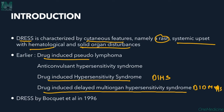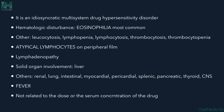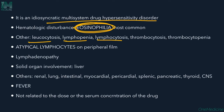First described by Bockett in 1996, DRESS is an idiosyncratic multi-system drug hypersensitivity disorder. The most common hematologic disturbance is eosinophilia. Other hematologic manifestations include leukocytosis, lymphopenia, lymphocytosis, thrombocytopenia, and thrombocytosis. On peripheral blood smear, atypical lymphocytes are seen — one of the hallmarks of DRESS.